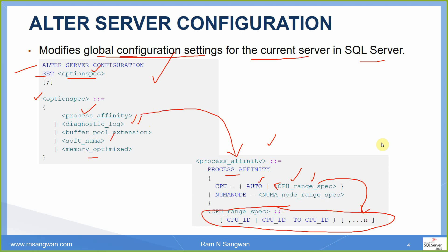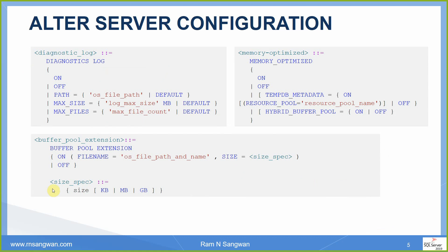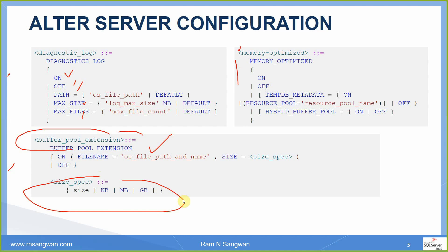For DIAGNOSTIC LOG, the possible values are ON, OFF, PATH, MAX SIZE, MAX FILES, or DEFAULT. For BUFFER POOL EXTENSION and MEMORY OPTIMIZED, there are similar possible values. Size specifications can be in KB, MB, or GB. This appears complex but you never execute the statement with all possible configurations at once — you work with one or two at a time, change a value, observe and verify the setting, then move on.